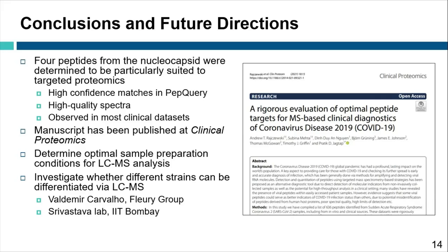To conclude, four peptides from the nucleocapsid were determined to be particularly suited to targeted proteomics. They had high confidence matches in the PEP query workflow, were observed to have high quality spectra, and were observed in most of the clinical datasets that we analyzed. A manuscript detailing these discoveries has been published in the Journal of Clinical Proteomics. For future directions in this work, we are working to determine the optimal sample preparation conditions for LC-MS analysis of SARS-CoV-2 patient data, and to investigate whether different strains of the virus can be differentiated effectively using LC-MS assays.